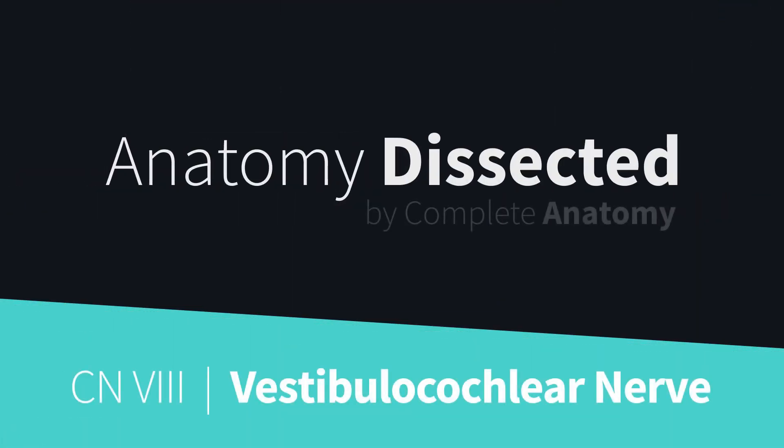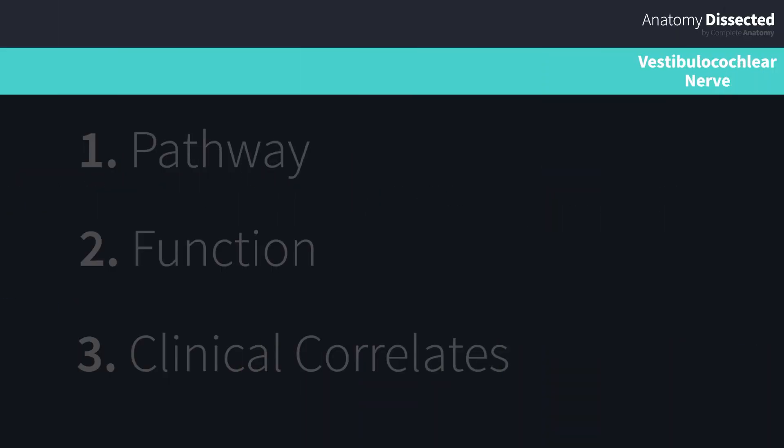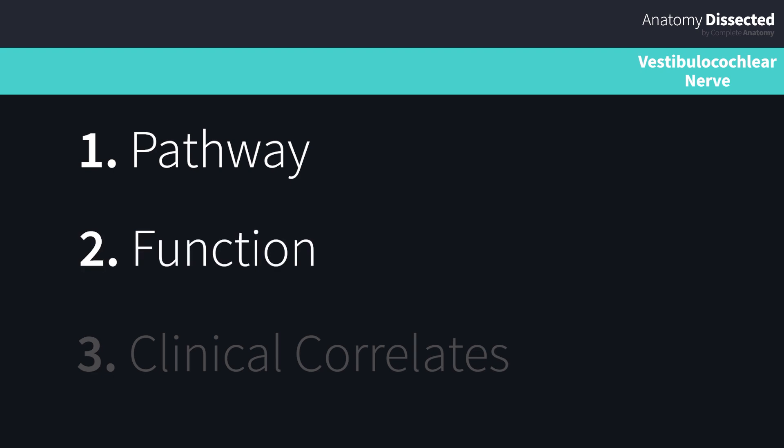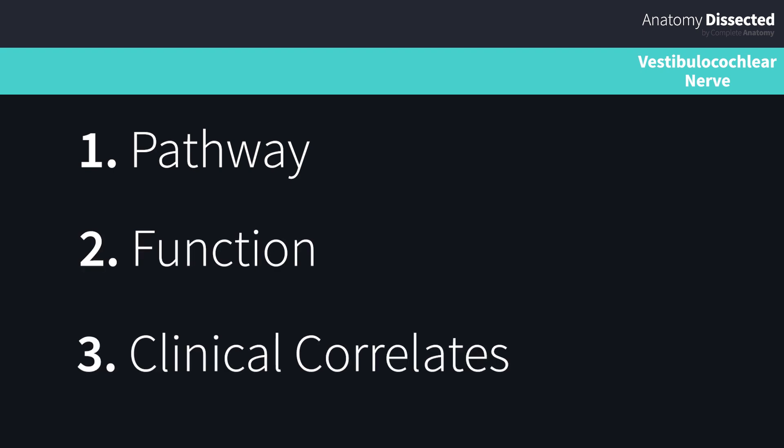Welcome back to Anatomy Dissected by Complete Anatomy. Today we're going to look at cranial nerve 8, the vestibulocochlear nerve. This video has three learning objectives: firstly, we'll explore the path of the vestibulocochlear nerve through the cranium; secondly, we'll look at its role in maintaining balance and hearing; and thirdly, we'll go through some of the common clinical correlates associated with this nerve.